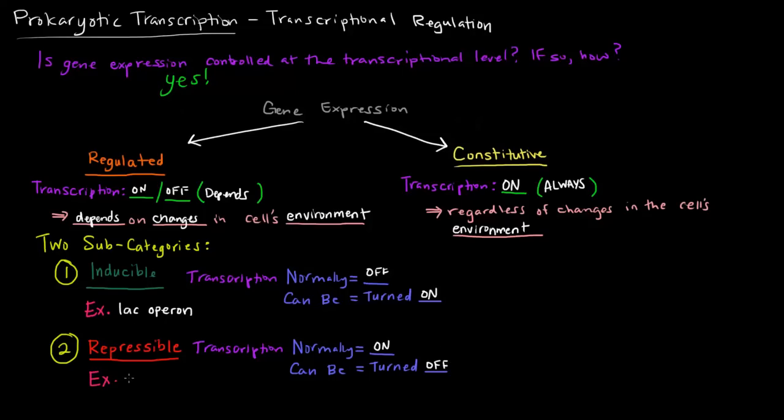And an example of a repressible system is the tryptophan operon, or the trp operon, which we will also talk about in detail later.